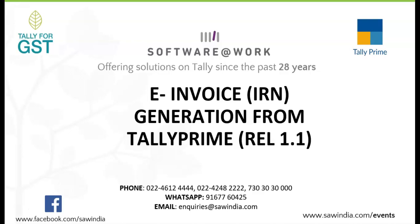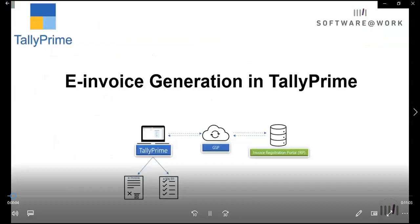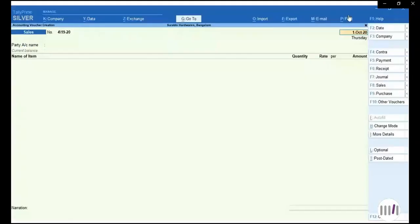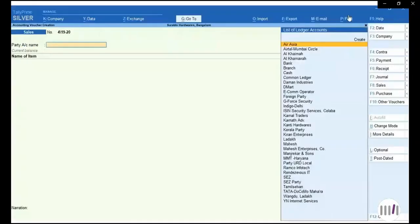Let us understand how we can generate e-invoicing, i.e., IRN number and QR code from Tally Prime. I will open my data and voucher type, then I will pass one sales entry and understand how we can generate the e-invoicing from Tally Prime.